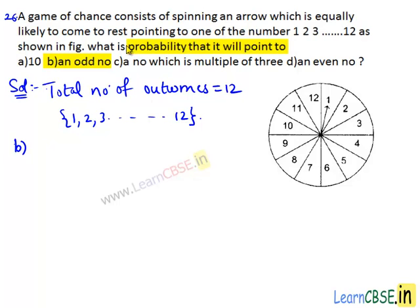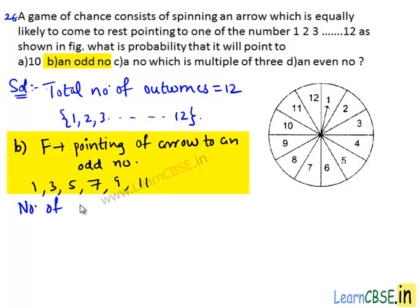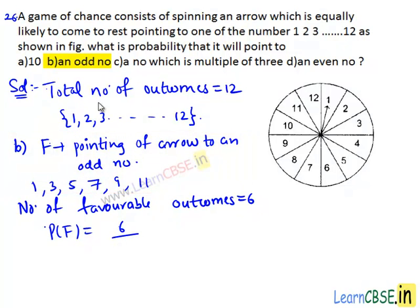Now let's see part (b). We need to find the probability that the arrow will point to an odd number. Let F be the event of pointing of arrow to an odd number. From 1 to 12, the odd numbers are 1, 3, 5, 7, 9, and 11. Then number of favorable outcomes equals 6, since the arrow can point to 1, 3, 5, 7, 9, and 11 in 6 ways. We have total number of possible outcomes as 12. Then P(F) equals 6 divided by 12, which simplifies to 1/2, equal to 0.5. Therefore, the probability of the arrow pointing to an odd number is 0.5.